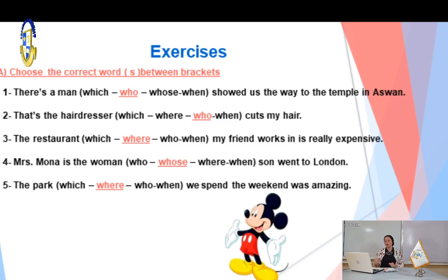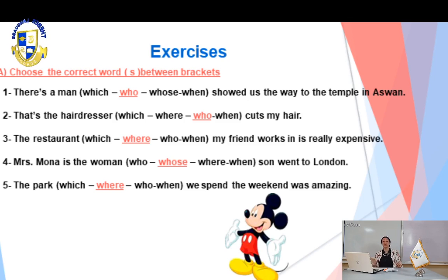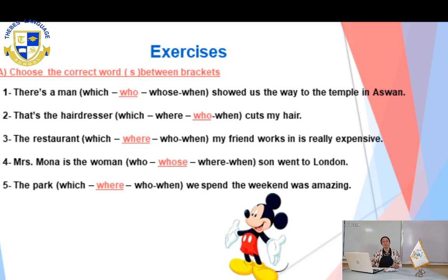Now let's move to the second one. 'That's the hairdresser...' — 'hairdresser' is the noun, and it refers to a person, so we are going to use 'who.' Very good. Now let's move to the third one. The sentence involves Mrs. Mona, and her son went to London — the son belongs to her, so we are expressing ownership. The relative pronoun to use is 'whose.' So: 'Mrs. Mona is the woman whose son went to London.'